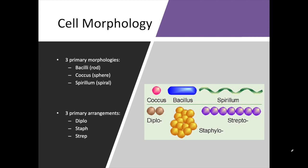Hello and welcome to part 2 of chapter 3's lecture on microscopy and cell morphology. In this half we're going to talk about the parts of the prokaryotic cell. We're going to look at bacteria and work our way from the outside to the inside, looking at all of the different structures and the function of each of those structures.